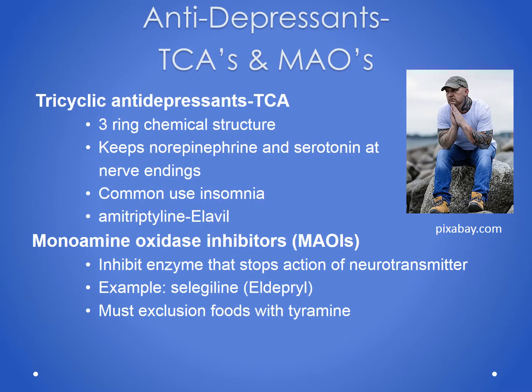Tricyclic antidepressants, or TCAs, keep serotonin and norepinephrine at the nerve terminals. They are the first drug of choice for insomnia because of the sedation these drugs create, and may also be used for severe depression or fibromyalgia to help with pain and sleep. The most commonly used TCA is amitriptyline, or the brand name Elavil. Tricyclics are named tricyclic because they have a three-ringed chemical structure.